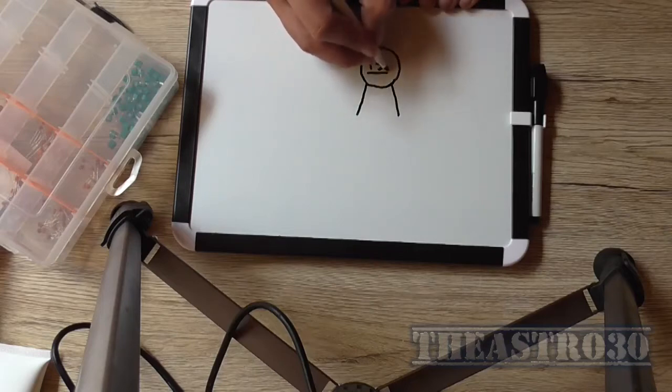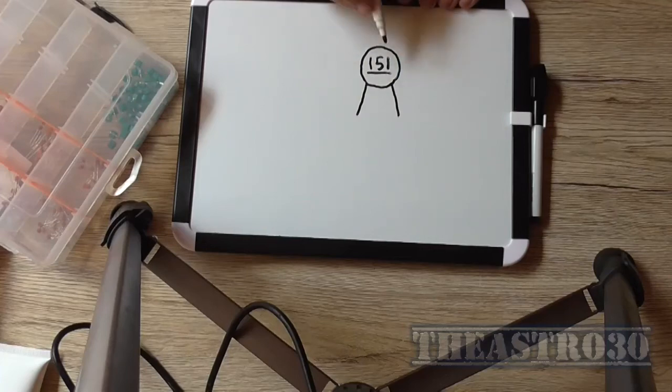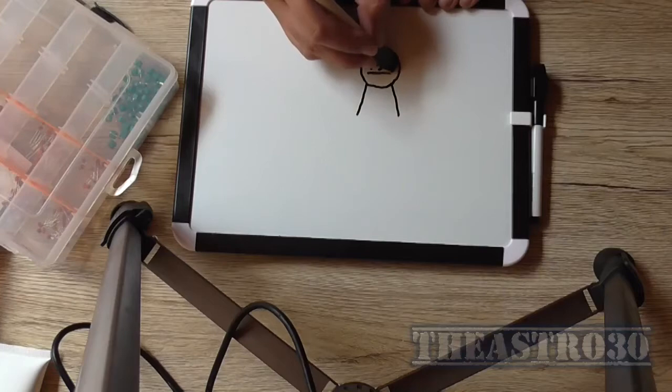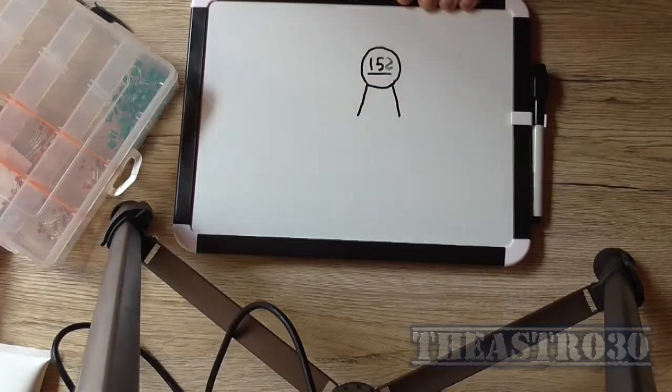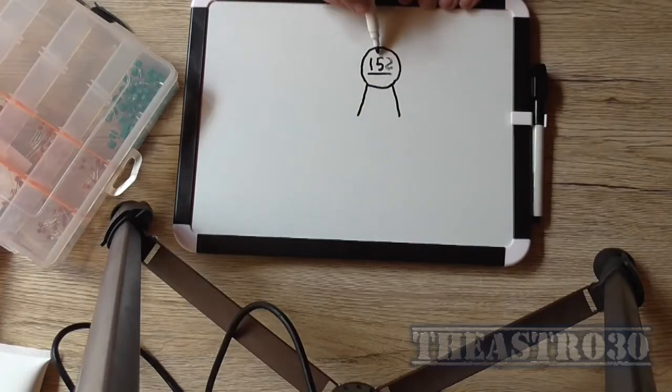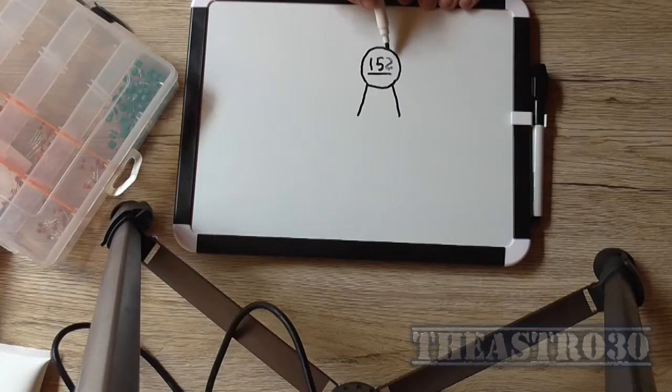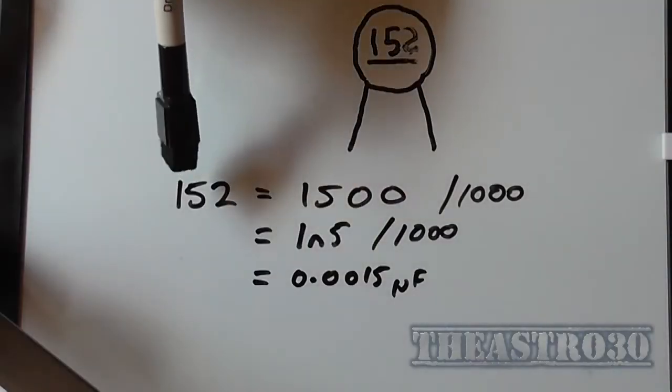But they often have this extra third digit on here, which is in this case 151, but let's for instance change that to 152. So that means that's one five with two zeros after it.